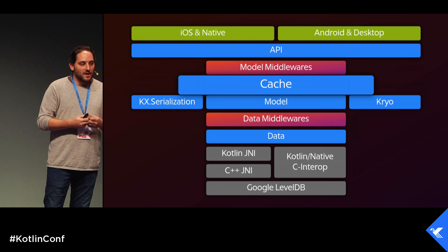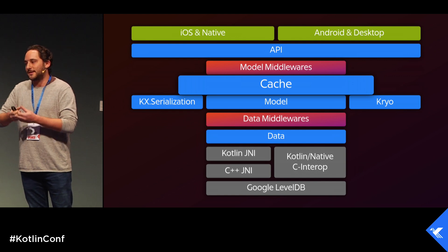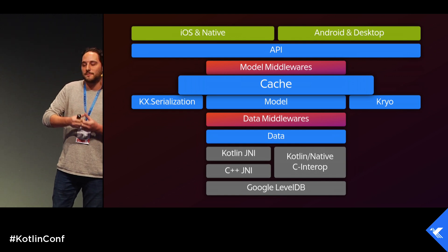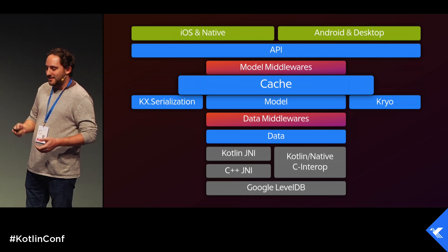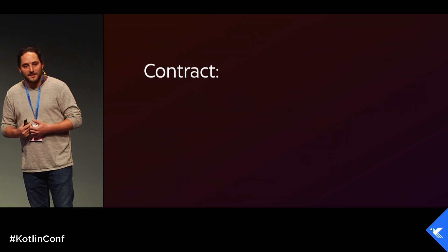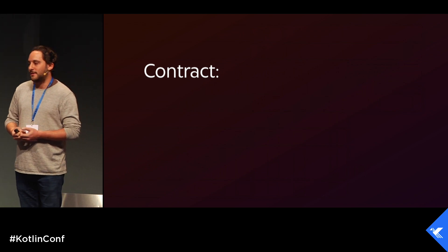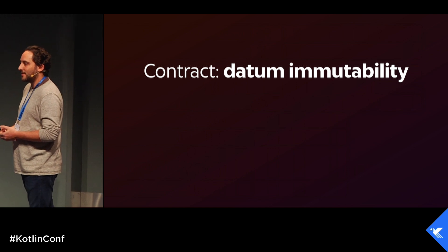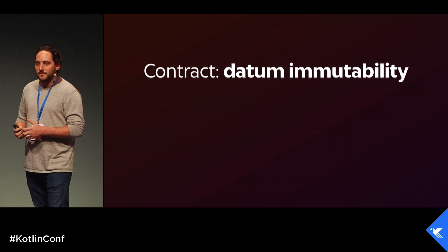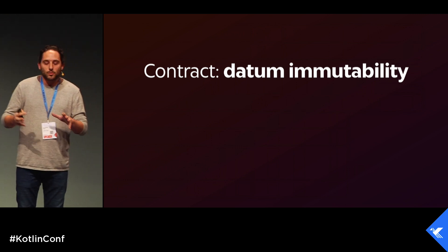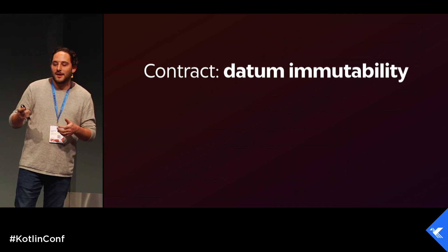The cache enables tremendous optimization: if you query multiple times, or put an object and query it later, it won't be deserialized or accessed from disk — it's in the cache and you get the same model. But because the cache exists, we need to make a contract. In our new relationship we need to add boundaries, and that first boundary is data immutability — a concept from functional programming.